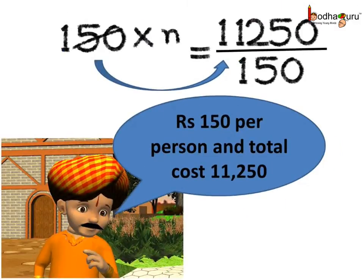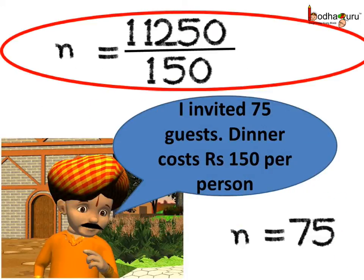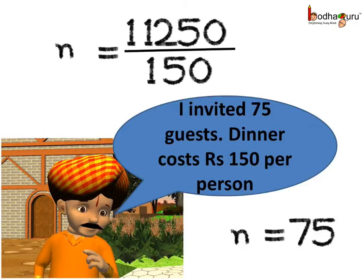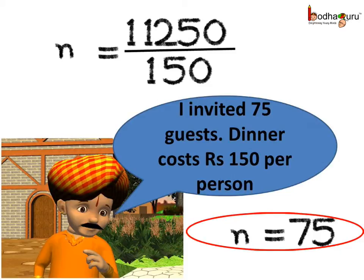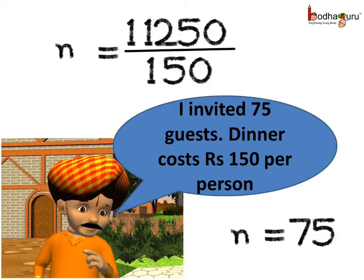To get the value of the unknown variable n, we can move 150 from the LHS of the equation to the RHS of the equation, and instead of multiplier, it becomes the divisor on the right hand side. So, n is equal to 11,250 divided by 150. After reducing this fraction, we get 75. So, n is equal to 75. Here we removed multiplier 150 from the left hand side and it appeared as the divisor on the other side.